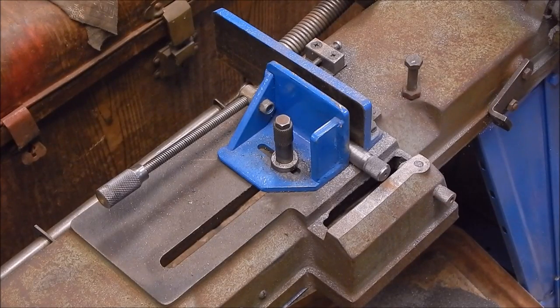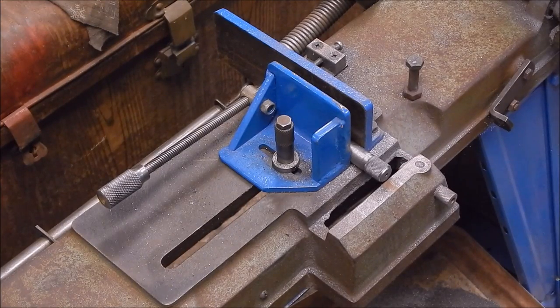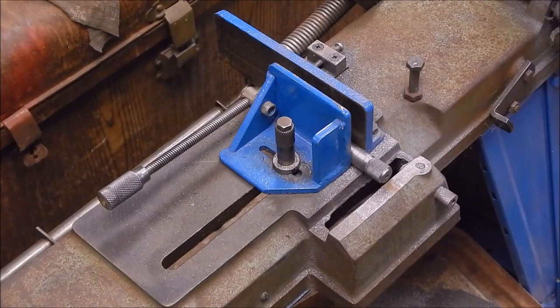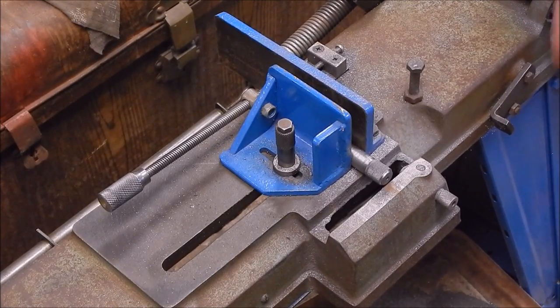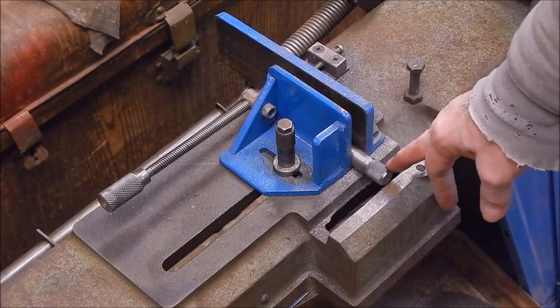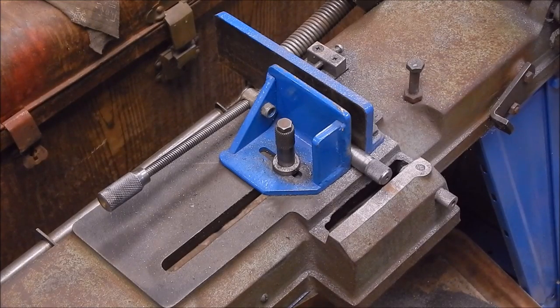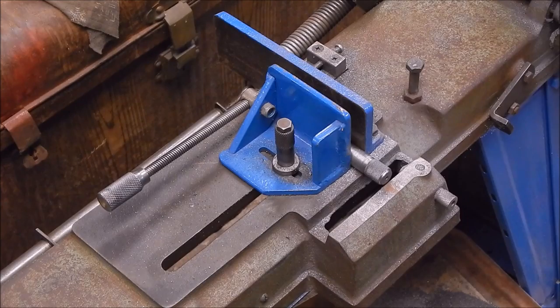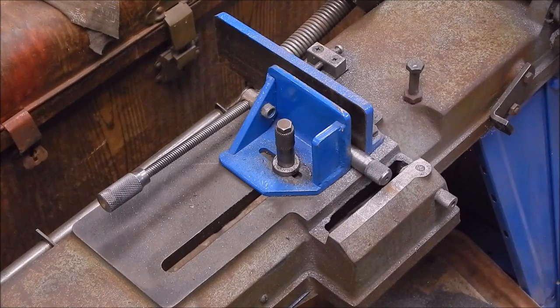Right, so we've done our knurling, we've done our thread, we've cleaned up the end. At this stage you could part it off on the lathe. I'm just going to use the band saw, it'll be quicker, and then I'll just put the cutoff knob into the Sherline in a collet and I'll just clean it up and reduce it to whatever thickness I want to make the knob and we're good to go.